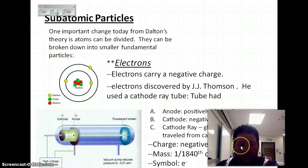And when it was plugged in or turned on, a light beam would shoot through it. The mass of an electron is very, very small, 1/1840th of a hydrogen atom. The symbol is E negative.